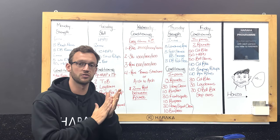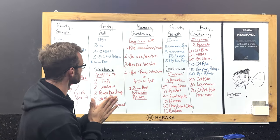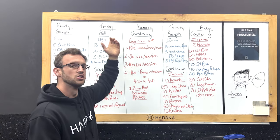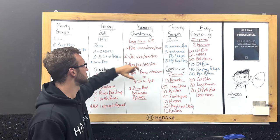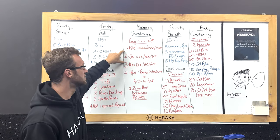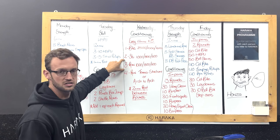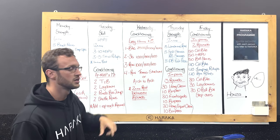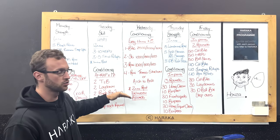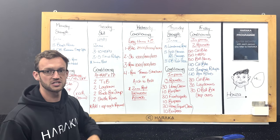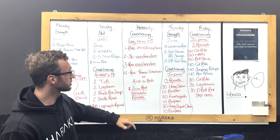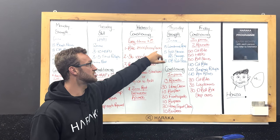Then for Wednesday we've got a nice little spicy one here. Every four minutes you're going to move over to the next station. Station number one is going to be on the bike. Station two is going to be on the ski. Station three is going to be on the rower. And then station four you're going to run. After you've completed all the stations you're going to have a nice two minute rest and we're going to repeat that again.